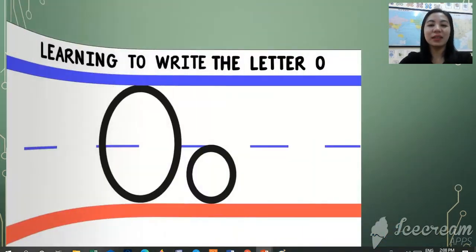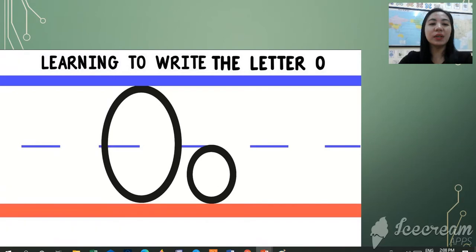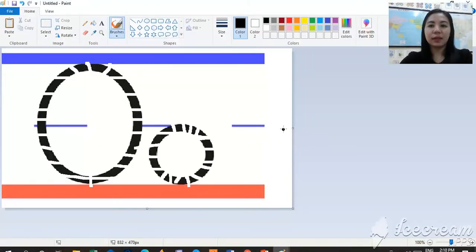Now we are going to learn how to write the uppercase O and the lowercase O. And it's like this. So in writing the uppercase O, first we are going to write around from up going down. Make a circle, then going up. So that's how we write the uppercase O.